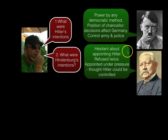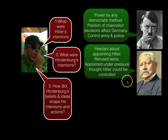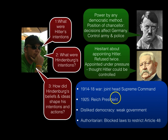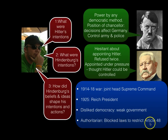What were Hindenburg's intentions? He didn't really want to appoint Hitler — he refused twice. It was only after the failure of other chancellors to gain popular support that he appointed Hitler under pressure, thinking that Hitler could be controlled. Hindenburg was a very aged, right-wing president from the army — essentially a right-wing authoritarian figure. He fulfilled his duty as president but didn't actively seek to undermine Weimar democracy; however, circumstances played into his hands. He blocked laws to restrict Article 48, and it's Article 48 that's key in getting Hitler appointed.